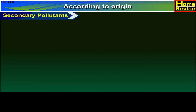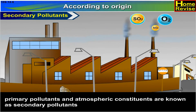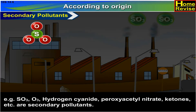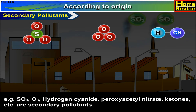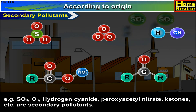Secondary pollutants are those formed in the atmosphere by chemical reactions between primary pollutants and atmospheric constituents. For example, sulphur trioxide, ozone, hydrogen cyanide, peroxyacetyl nitrate, ketones, etc. are secondary pollutants.